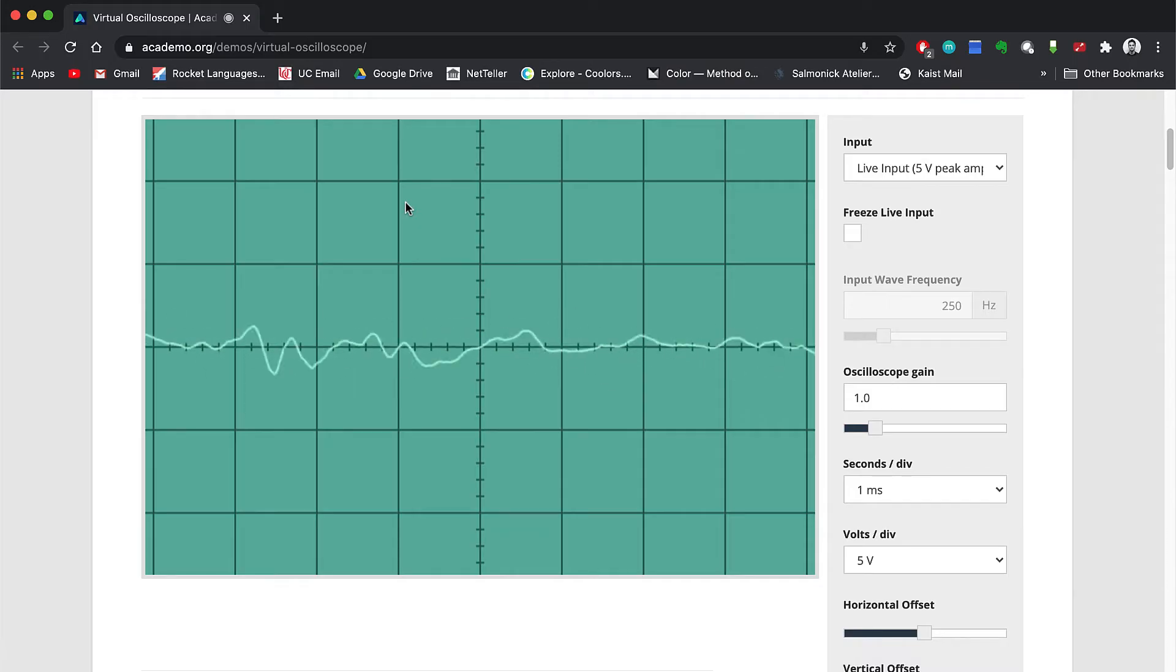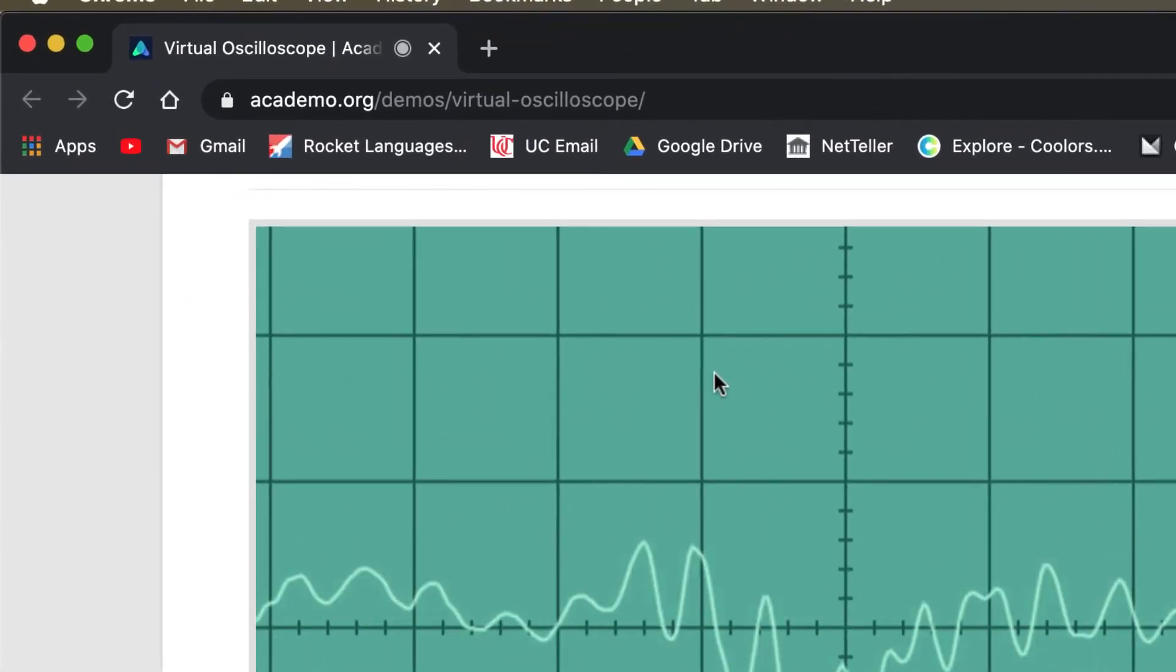Starting off, we're going to want to open the website with the oscilloscope. You can find the link in the video description or you can go ahead and pause the video here and copy the URL.